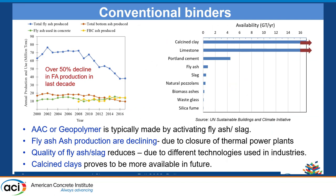As mentioned earlier, fly ash and slag have been used mostly in alkali activation. However, recent studies show that fly ash and slag production are declining due to the closure of thermal power plants and increases in steel recycling. A 50% decline in fly ash production has been recorded in the last decade, so we need to investigate new materials as binders for alkali activation.